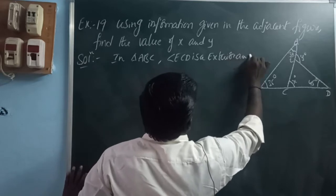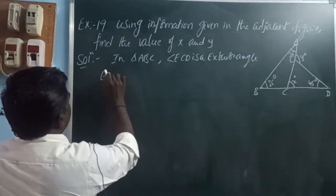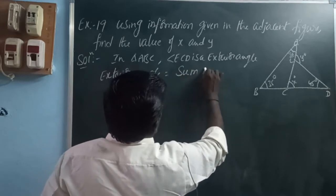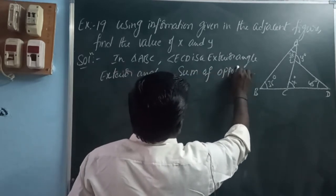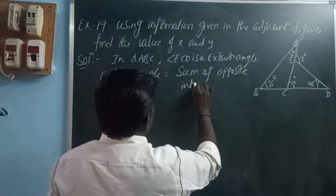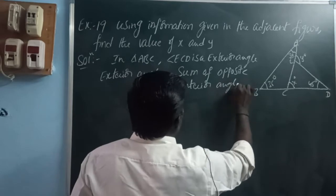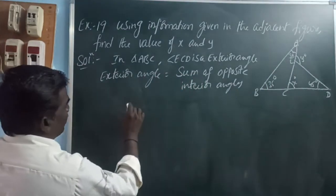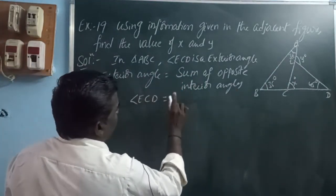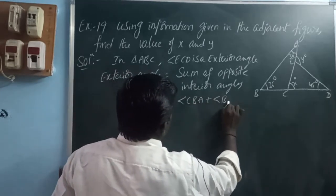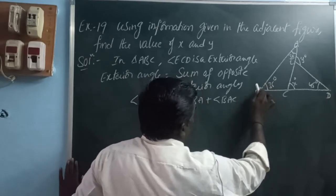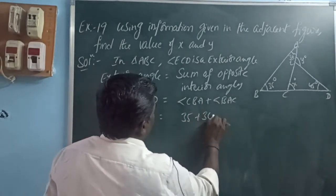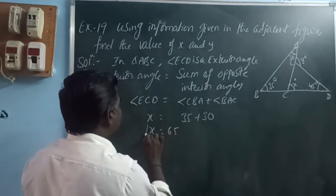We can find X using the exterior angle property: exterior angle equals sum of opposite interior angles. Angle ECD equals angle CBA plus angle BAC. Angle ECD is X, which equals 35 plus 30. So 35 plus 30 equals 65. The X value is 65.